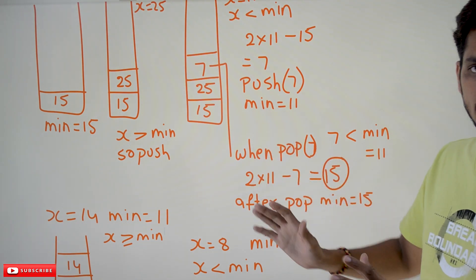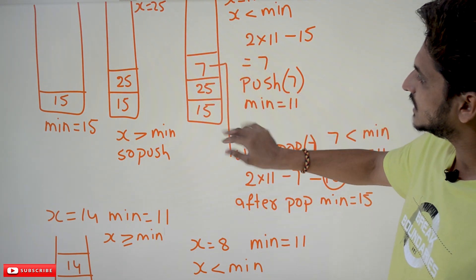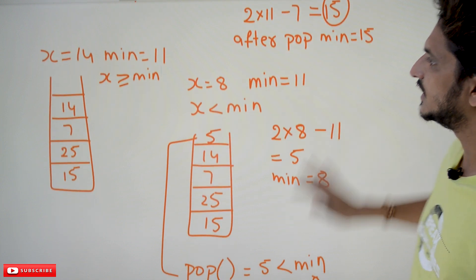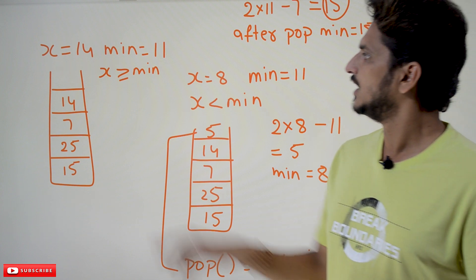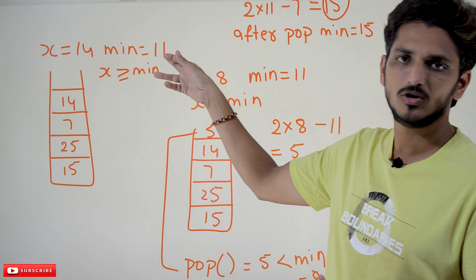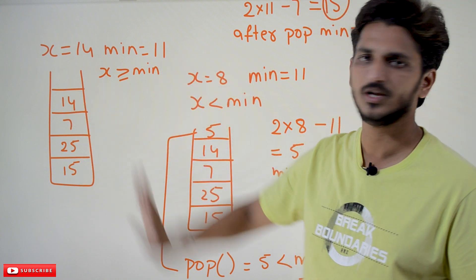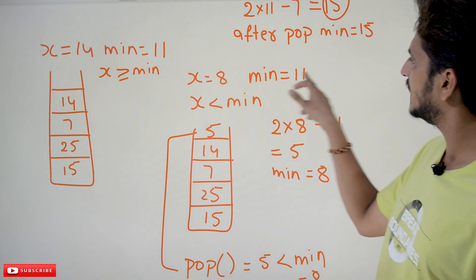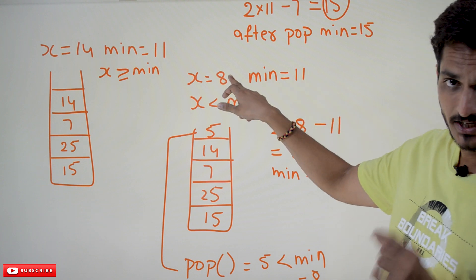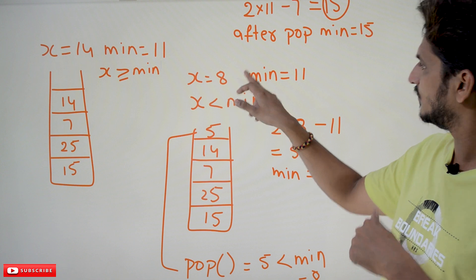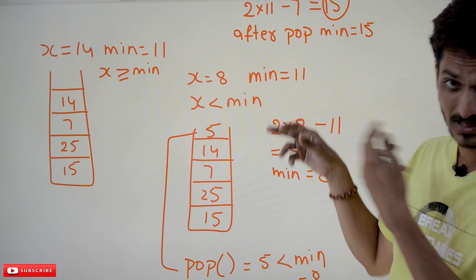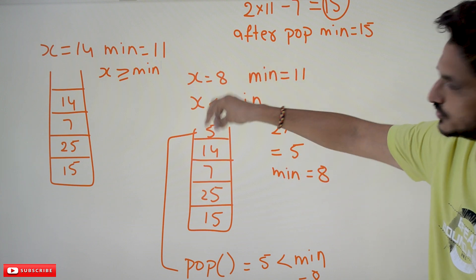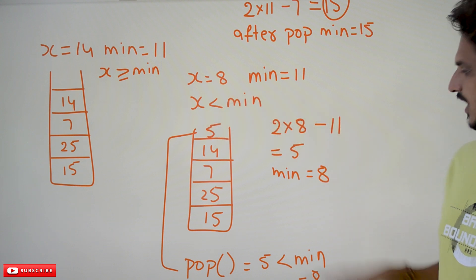Let's continue the example. The stack currently has 15, 25, 7 (instead of 11), and min is 11. Next element: X equals 14, min is 11. X is greater than or equal to min, so directly push 14. Stack: 15, 25, 7, 14. Min stays 11. Now push 8: min is 11. Instead of pushing 8, compute 2 × 8 − 11 = 5. Push 5 instead, and set min equal to 8.